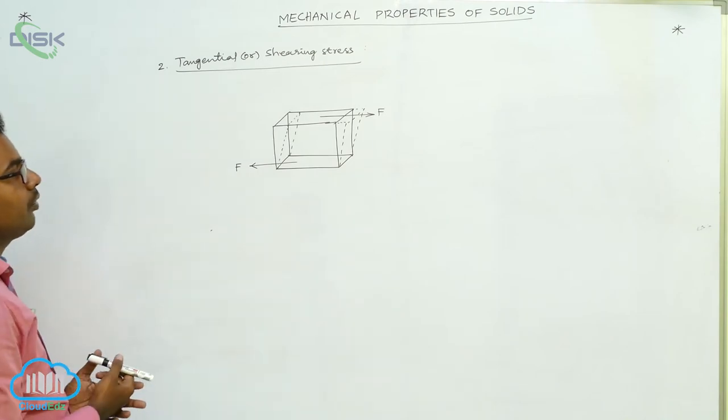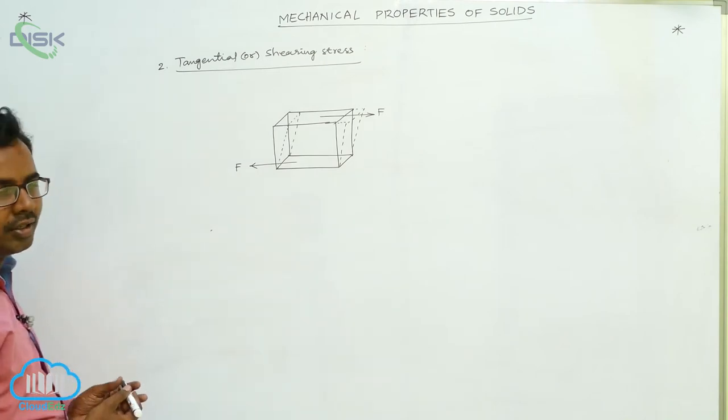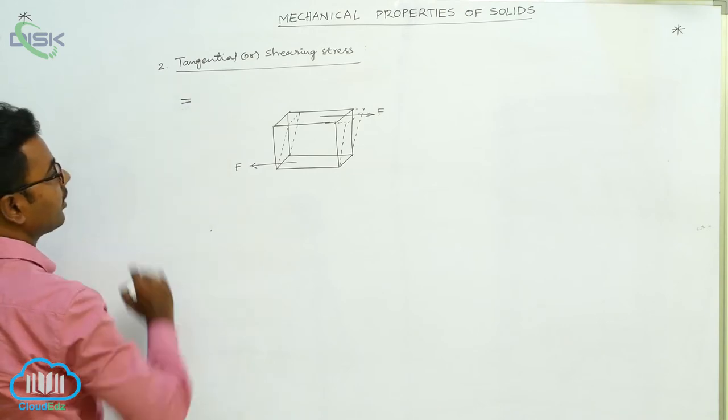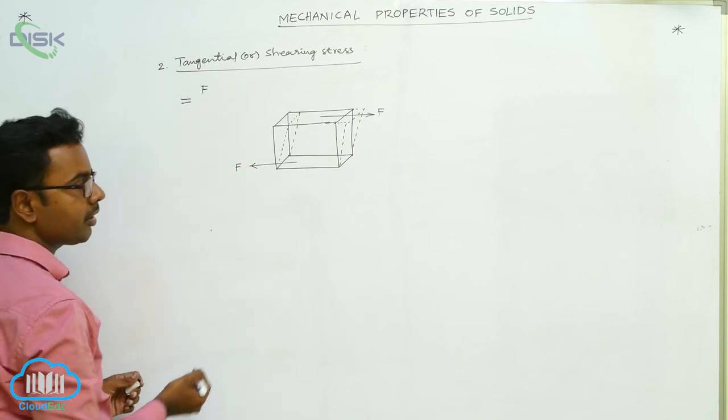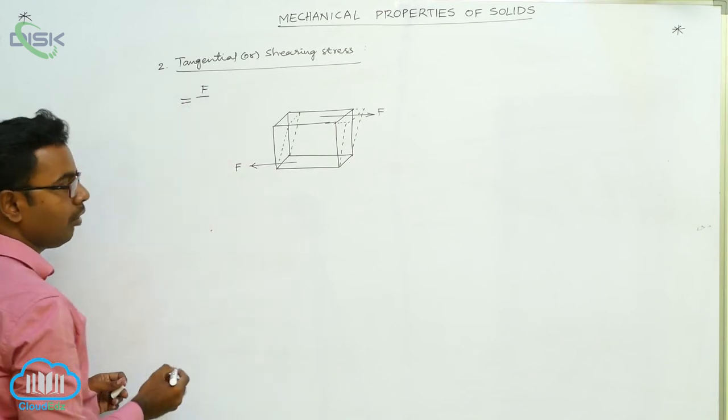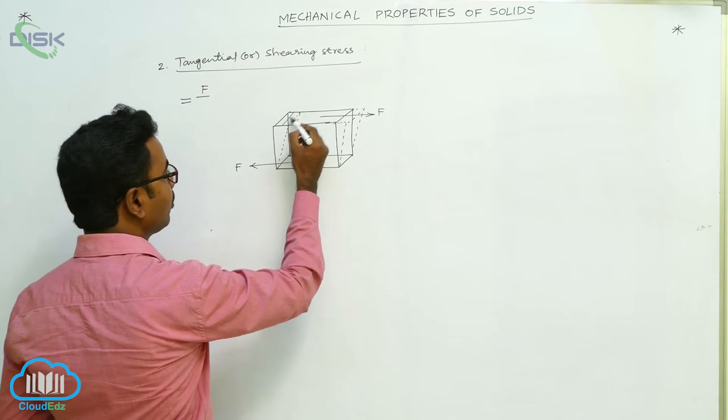How do we calculate tangential or shearing stress? Tangential shearing stress is calculated by the formula: applied force or restoring force F by area on which it is acting.